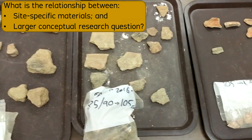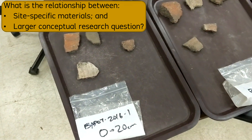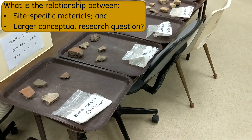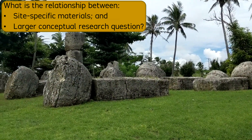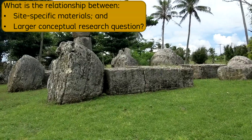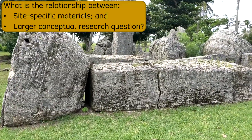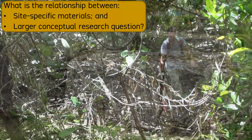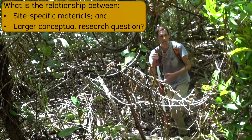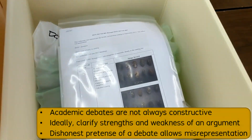In this brief outline of a logical argument structure in archaeology, you can see that the most critical point is the relationship between the site-specific materials and the larger conceptual research question. If you can concentrate on this aspect of a logical argument, then you can either avoid or resolve almost any potential criticism or source of debate in archaeology. Although my approach here is straightforward, disagreements and debates occur frequently in archaeology.